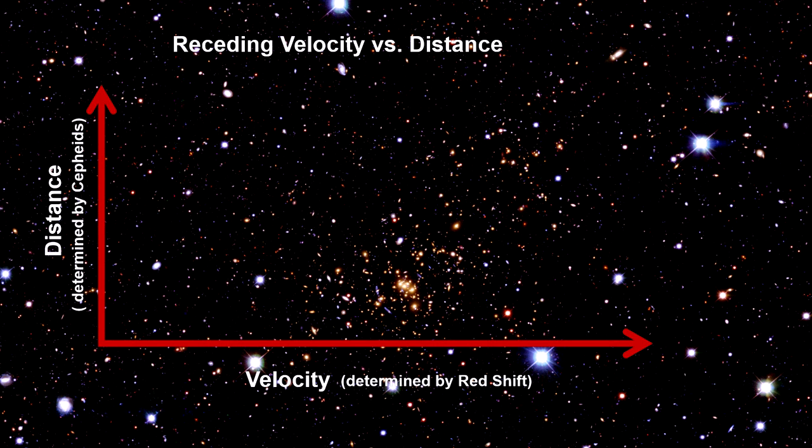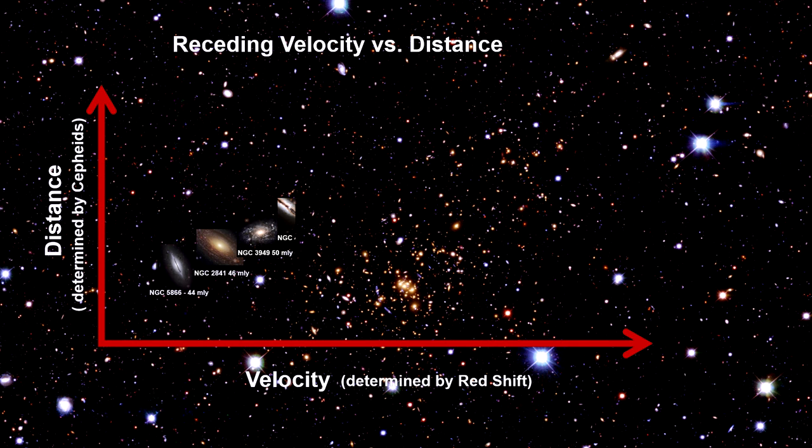Then, in 1929, Edwin Hubble published his studies of galactic velocities. He found that, except for a few nearby galaxies, all the spectra shifts were to the red. All of them were moving away from us.